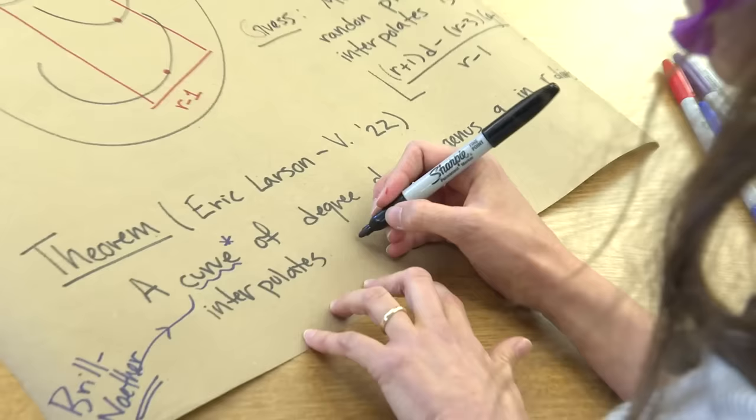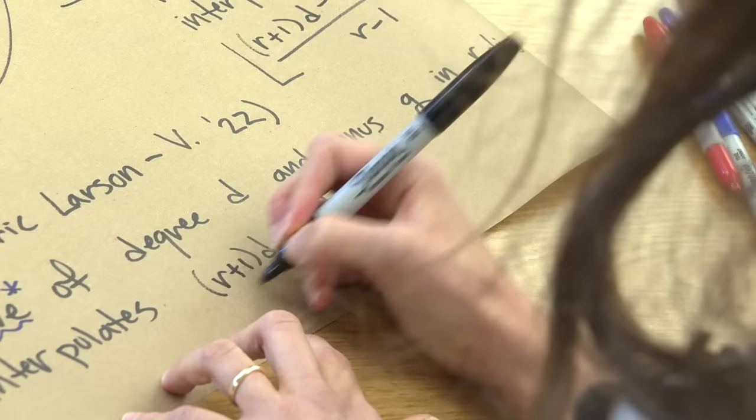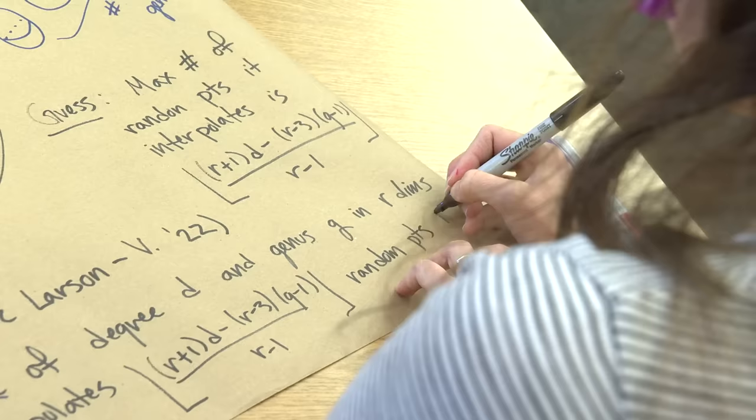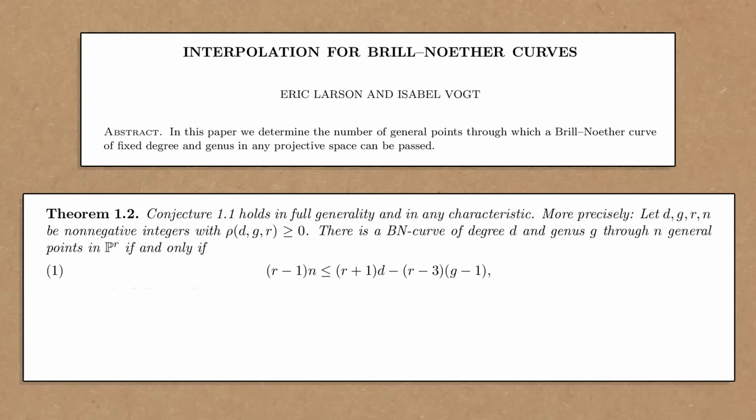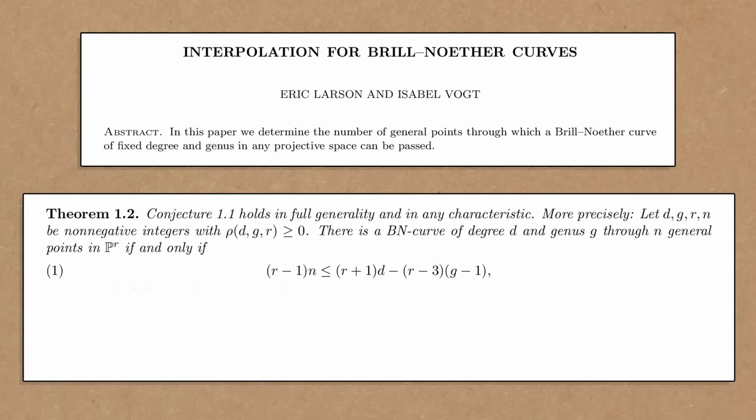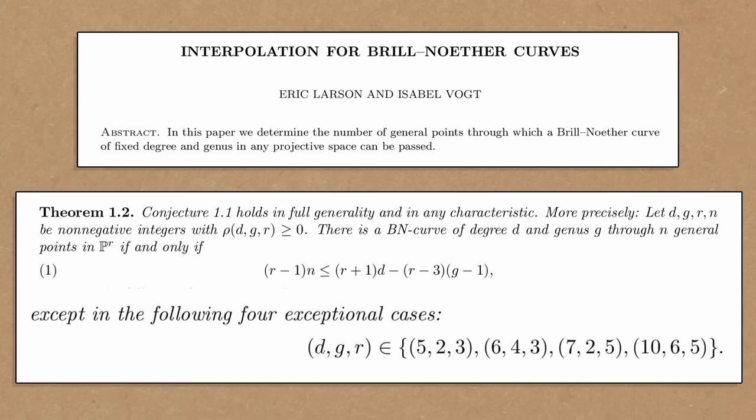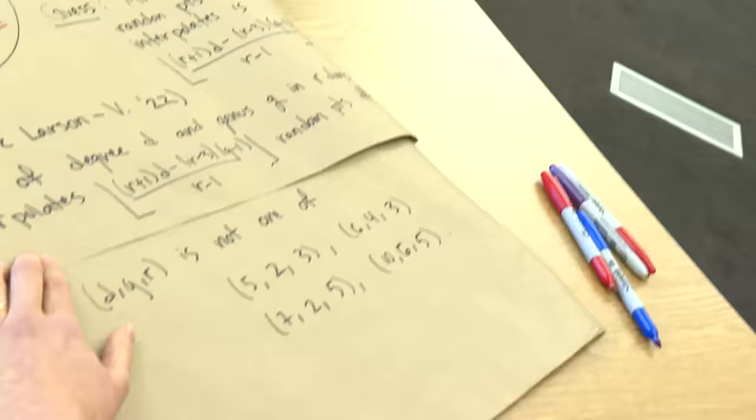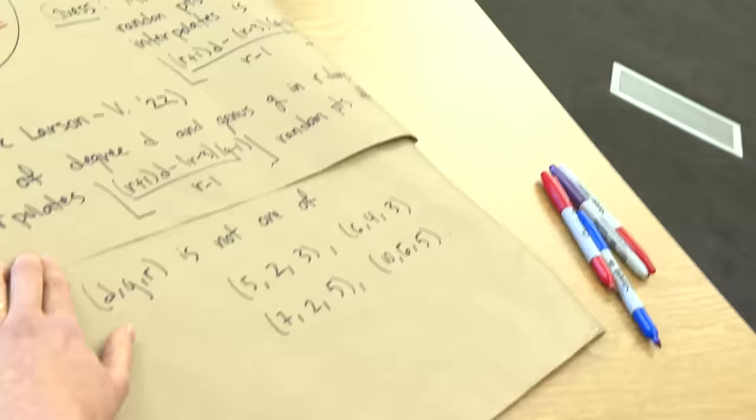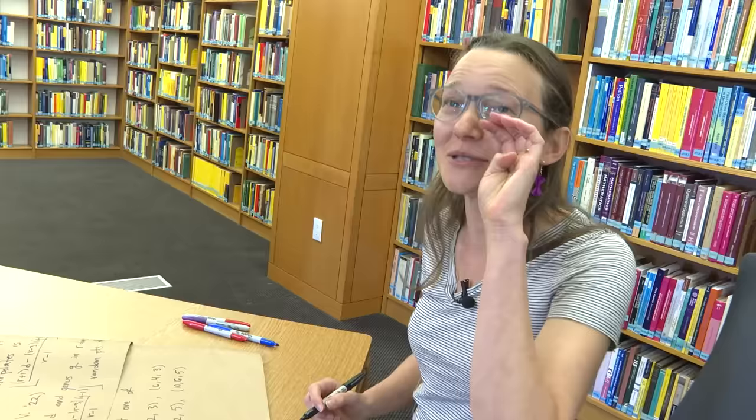So curve of degree d and genus G in r dimensions interpolates this expected number r plus 1 d minus r minus 3 g minus 1 over r minus 1 random points if and only if d, g, r is not one of 5, 2, 3; 6, 4, 3; 7, 2, 5; and 10, 6, 5. So the guess is usually right. Isn't that crazy? The guess is right with exactly four counterexamples.